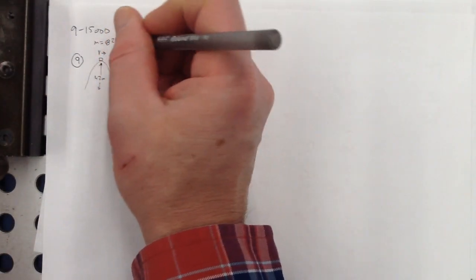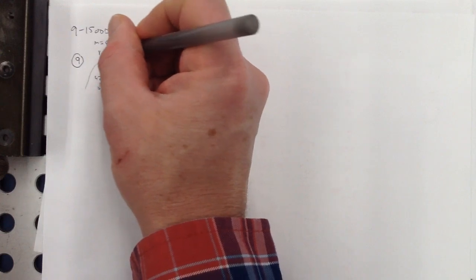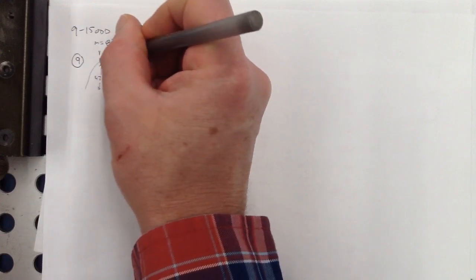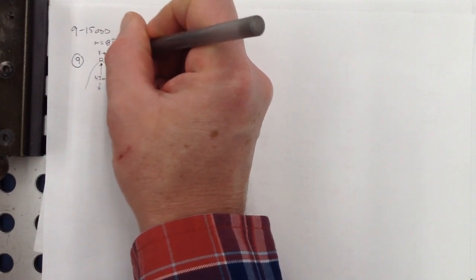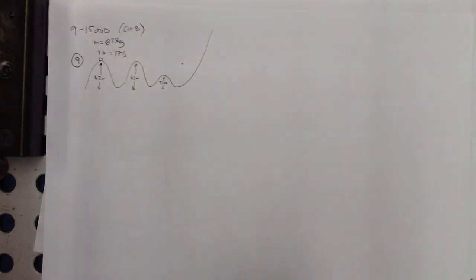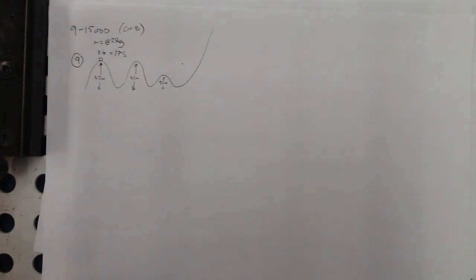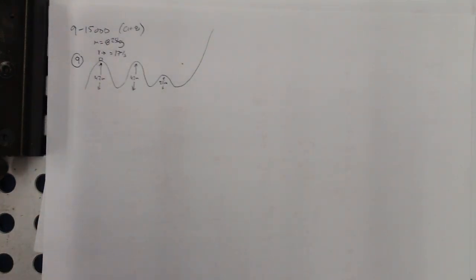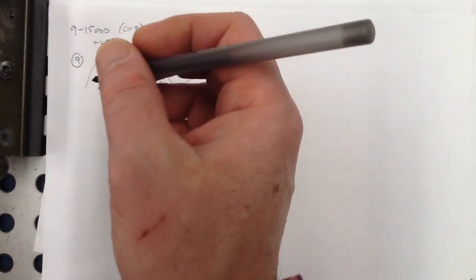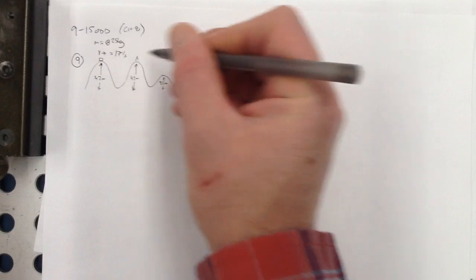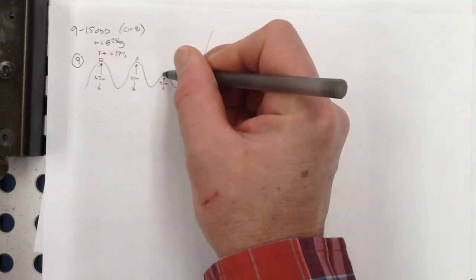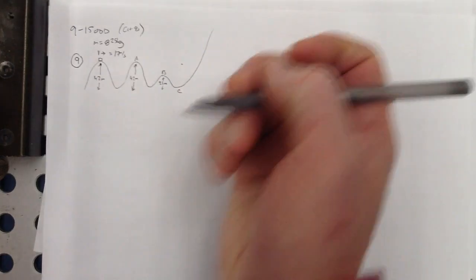The velocity is 17 meters per second. So in number 9, what's the speed of the car at point A, point B, and point C? Those are labeled point A, point B, and point C, and there's no friction.